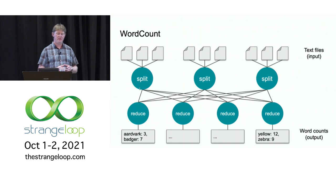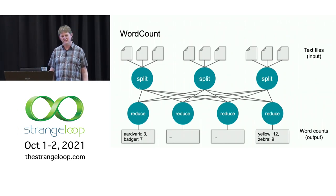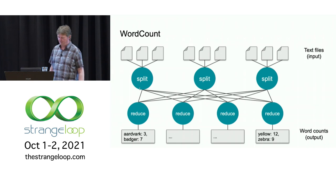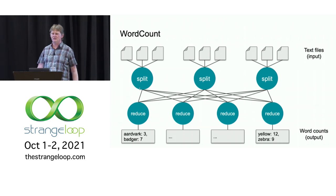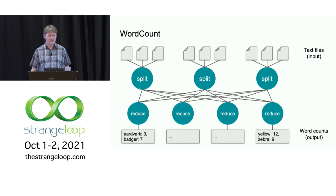If we simplify the problem a little bit, we end up with the well-known word count problem, where we're not actually storing the document IDs — we're just simply counting the number of occurrences of each word. This problem — word count — first arose, as far as I know, in the MapReduce paper around 2005, which was arguing for this kind of distributed system and arguing for a particular programming model called MapReduce to solve it.